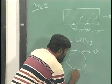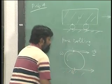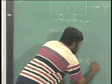Which means that the velocity of this point, let me call this as B, velocity of B is equal to zero.